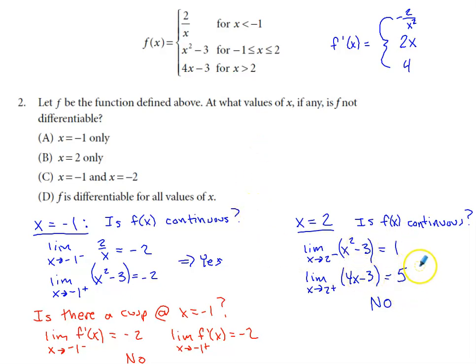But if we try to answer the continuity question about the x value of two, on the smaller side of two, I would be on this inequality. So using the middle part of the definition of the function, two squared minus three is one.